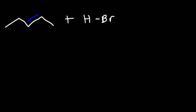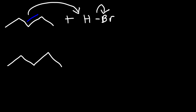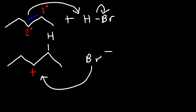Consider the reaction between 2-pentene and hydrobromic acid. What products can we get in this reaction? The double bond is going to attack the hydrogen, expelling the bromine atom. Notice that one carbon of the double bond is secondary and the other is also secondary, so the hydrogen can go on either one because they're equally substituted. Putting the hydrogen on one carbon gives a secondary carbocation, and the bromide attacks that carbon, giving us 3-bromopentane. Notice that this carbon is not chiral, so we're not going to get a racemic mixture for this particular product.